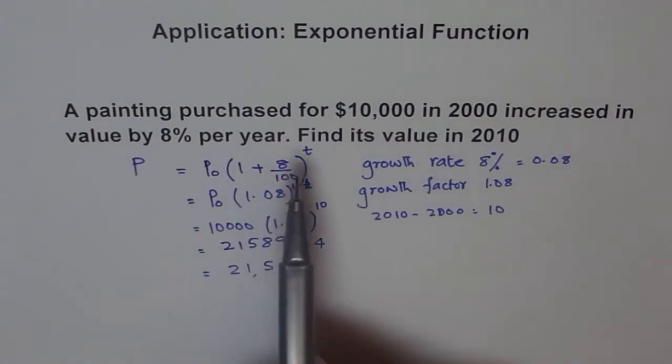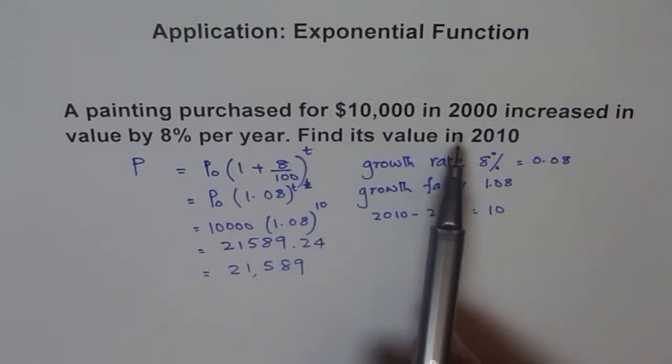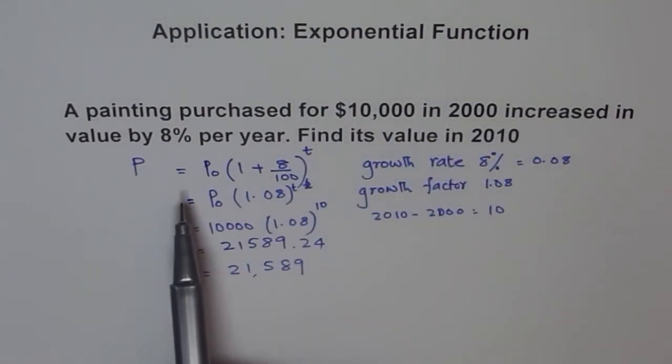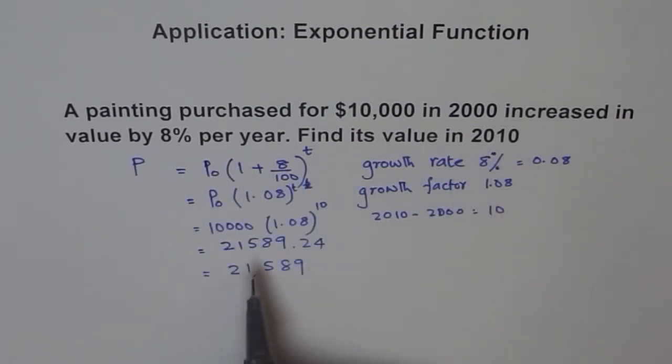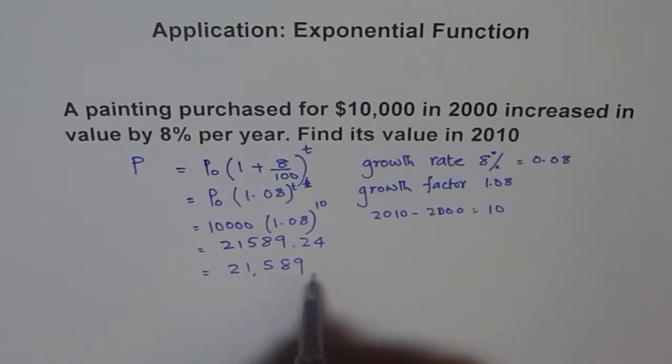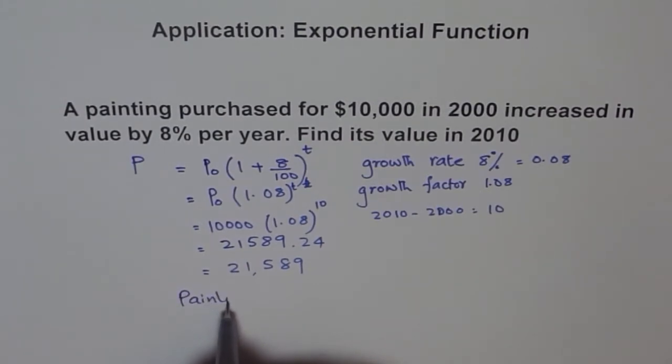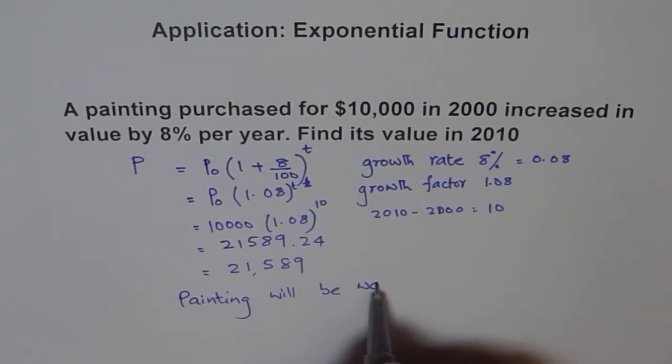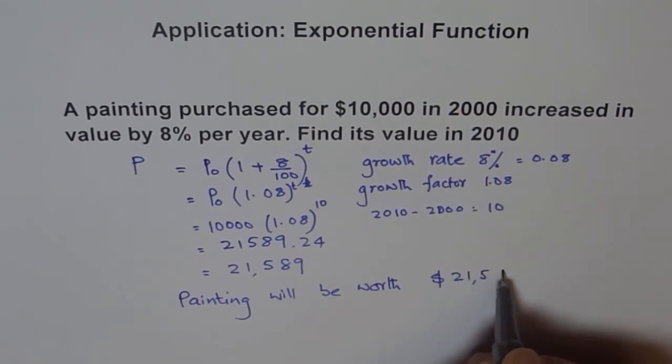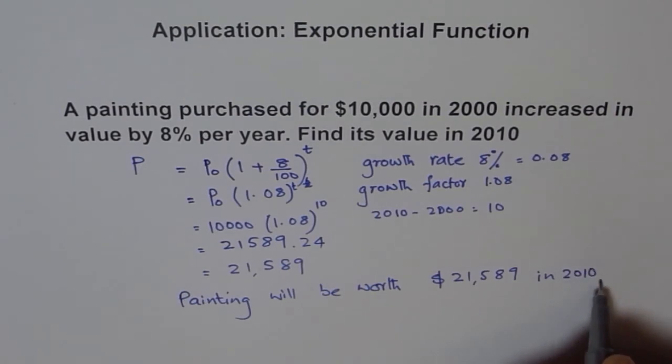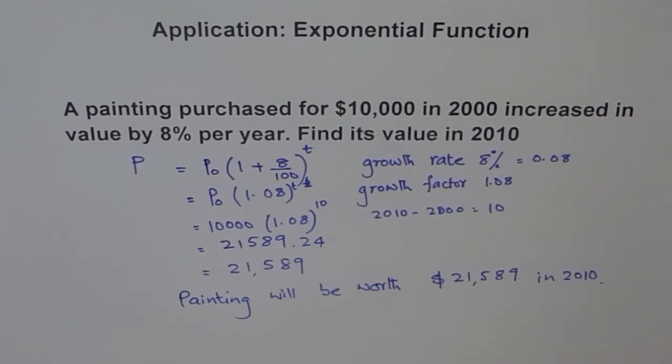So, a painting purchased for $10,000 in 2000, when increased or appreciated by 8% per year, its value in 2010, that is after 10 years, will be $21,589. So, the painting will be worth $21,589 in 2010. Okay. Thank you.